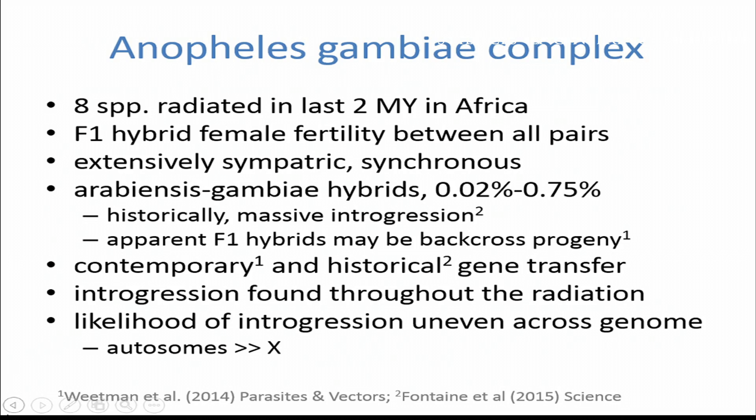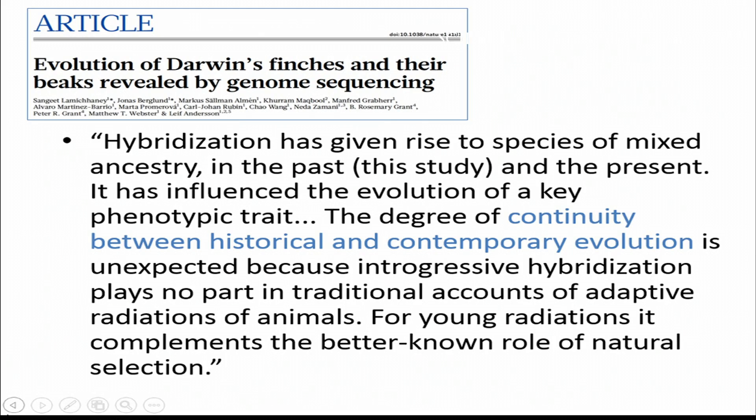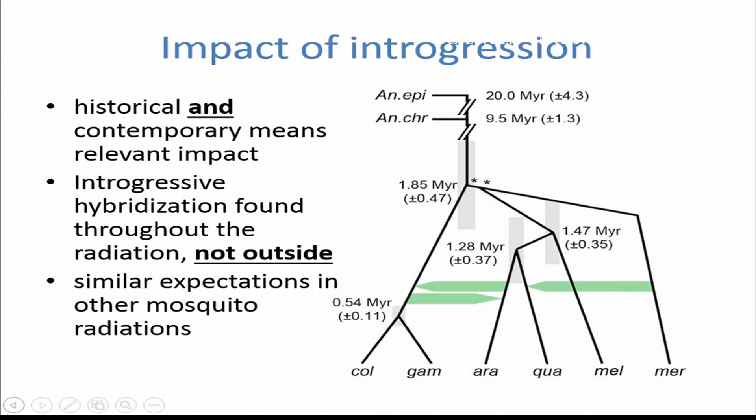The risk of gene transfer varies across the genome and is less on the X chromosome — this is a general pattern, not just true of Anopheles gambiae. The impact of introgression is significant in a socially relevant time frame. In newly radiated species such as the gambiae complex, we see lots of events of introgression not merely between Gambiae and Arabiensis but other species as well.